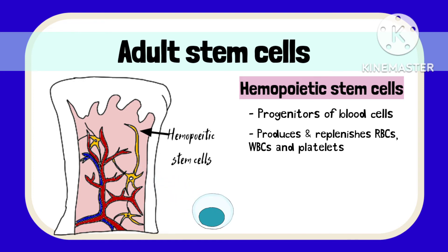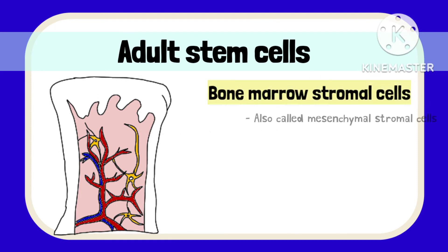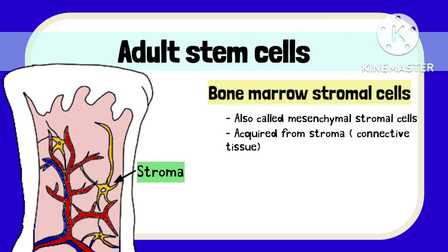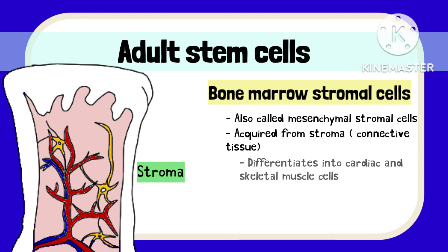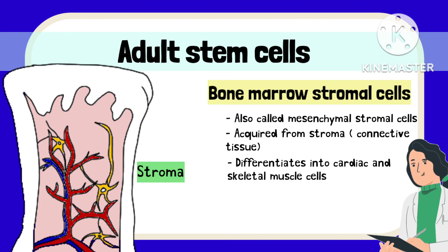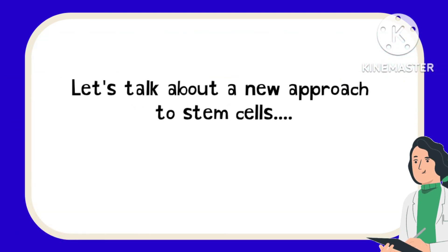From one hematopoietic stem cell, any of the three blood cell types is produced. The other type of adult stem cell is the bone marrow stromal cell, also commonly called mesenchymal stromal cells. They are acquired from the stroma — the connective tissues surrounding various organs. These cells have been found to differentiate into cardiac and skeletal muscle cells, though they are not fully understood and their success depends on the area from which they are isolated and how they are acquired and grown.